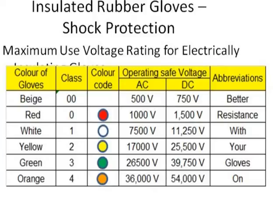There are different color codes for each class. You can remember them with the abbreviation: 'Better Resistance With Your Gloves On.' B stands for beige — class double zero. R stands for red — class zero. W stands for white — class one. Y stands for yellow — class two. G stands for green — class three. O stands for orange — class four. For operating safe voltages, class double zero handles AC 500V and DC 750V, and so on for higher classes.